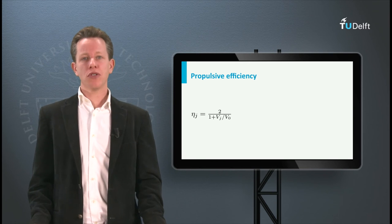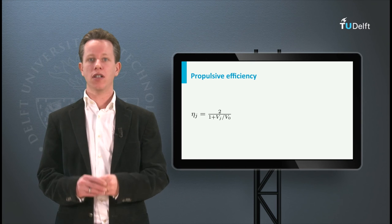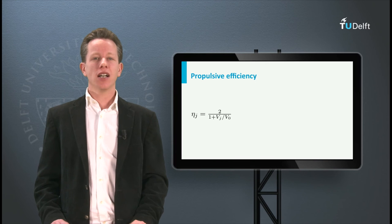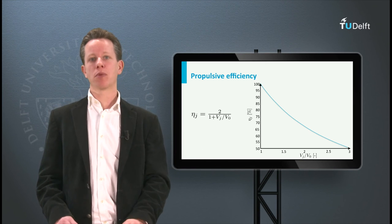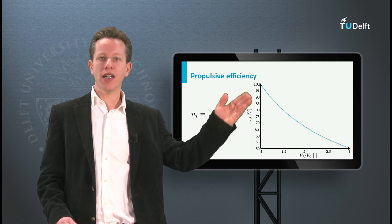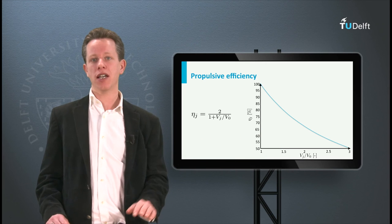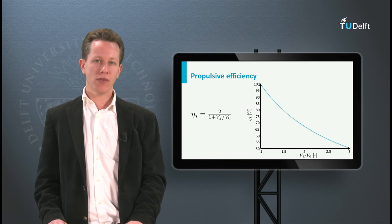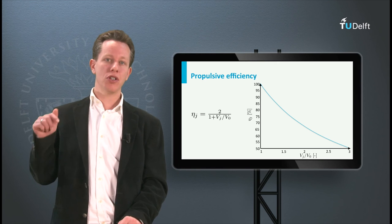So the propulsive efficiency purely depends on the ratio of the jet velocity and the flight velocity. Now if we would make a graph of this equation with propulsive efficiency on the y-axis and the ratio of airspeed and jet velocity on the x-axis, you can observe that as the ratio increases, propulsive efficiency decreases.